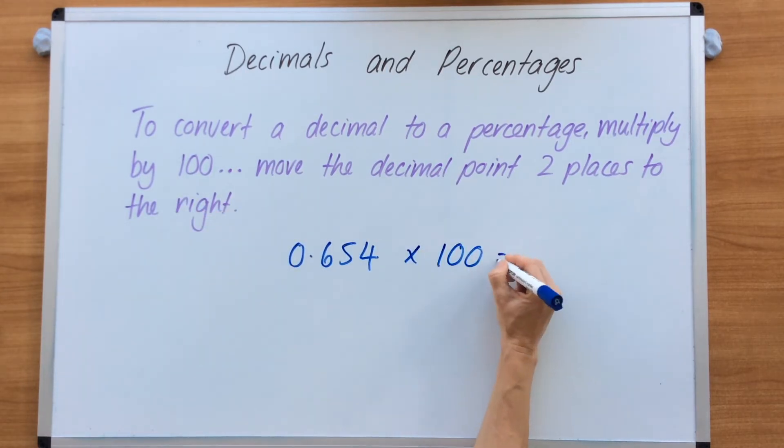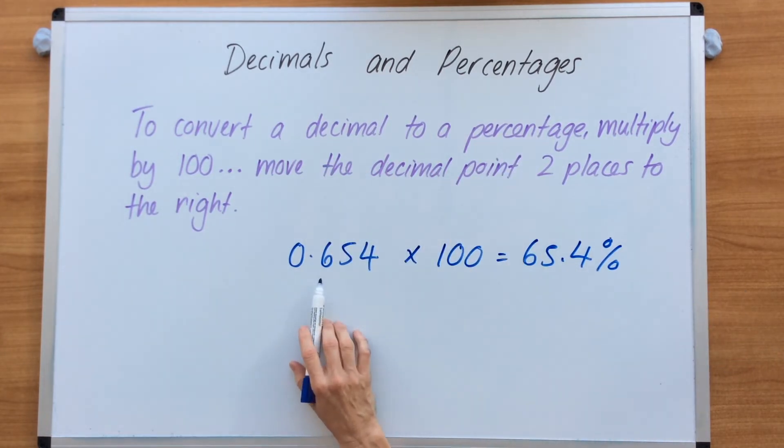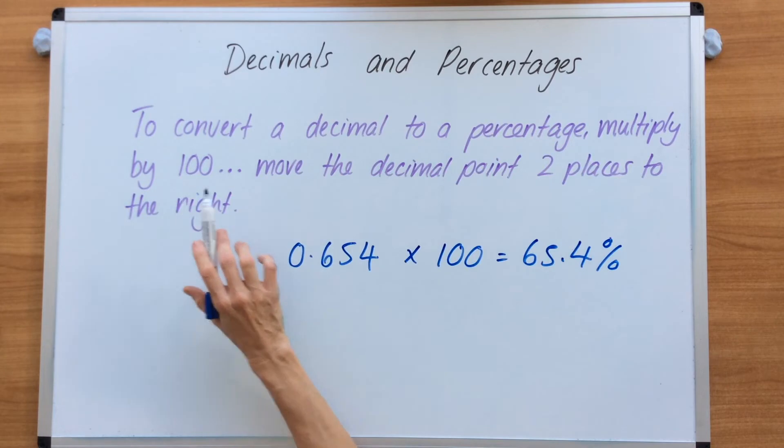That's going to give us 65.4. And that's our new percentage because we're going from decimal to percentage. Decimal times 100 equals 65.4%.